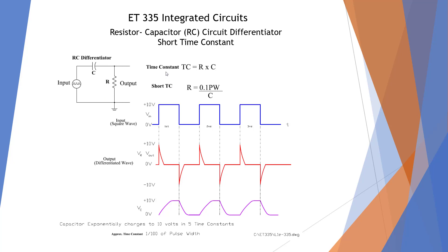We're going to utilize the time constant resistance times capacitance. We're going to use this form for what we call a short time constant differentiator: R equals 0.1 times the pulse width over the capacitance. So we're going to use this formula to find the resistance. Pulse width would be the time high, and the capacitor is going to be fixed or given.